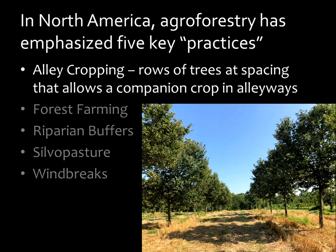Among these five key practices, alley cropping involves taking rows of trees and placing them at a spacing that allows the grower to put a different crop in between those rows — a companion crop grown in the alleyways. This differs from just an orchard of a nut crop where trees are planted in rows, because now you have another crop in between. In this case, we're looking at Chinese chestnut grown for the nut, with wheat grown in between. There's enough space to grow and harvest wheat as an additional product.